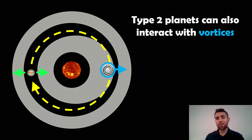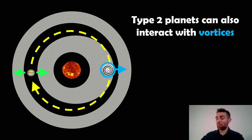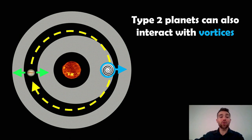Type 2 can interact with vortexes as well and it causes a similar sort of effect, but this time you've got a gap, and that gap is important to how they actually interact. The planet is not directly going into the vortex — it's what that vortex does to the gap and the material in the disk which determines how the planet is going to move.